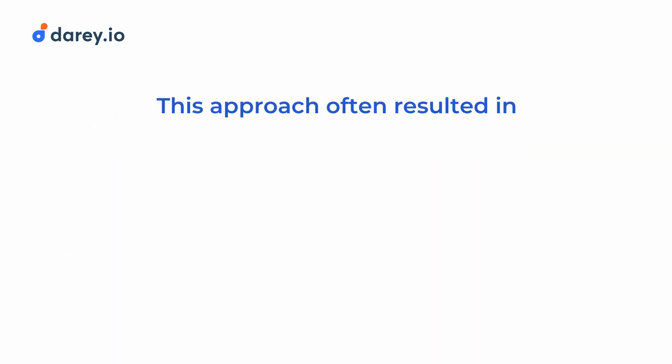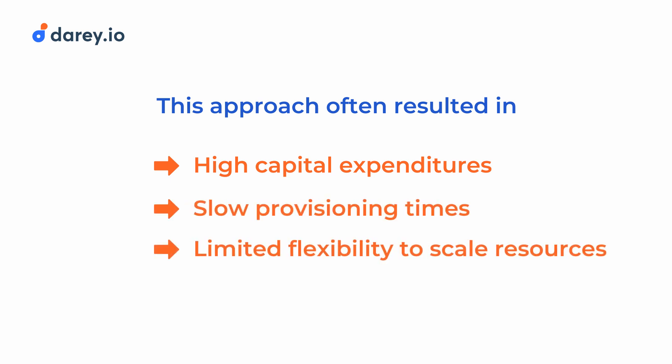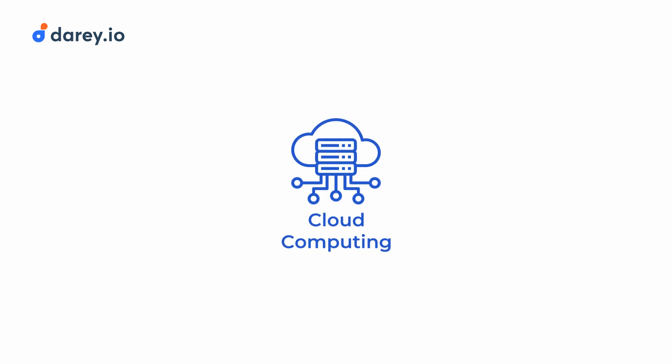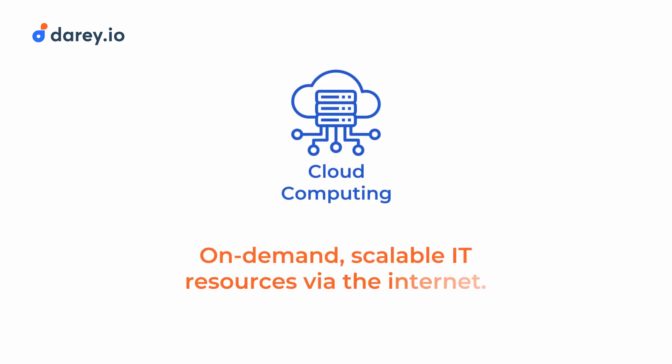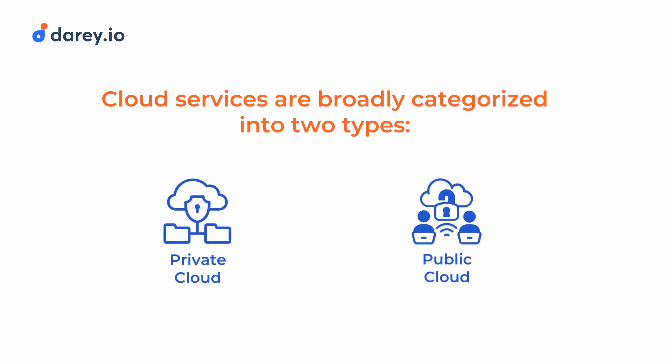This approach often resulted in high capital expenditures, slow provisioning times, and limited flexibility to scale resources up or down as needed. To overcome these challenges, cloud computing emerged as a powerful alternative, offering on-demand, scalable IT resources through the internet. Cloud services are broadly categorized into two types: private and public cloud.